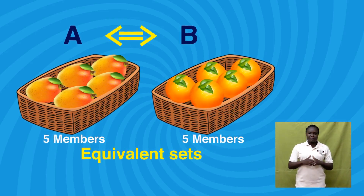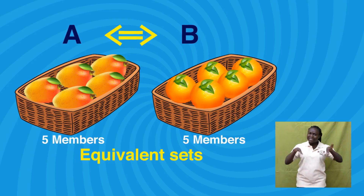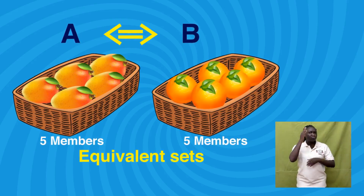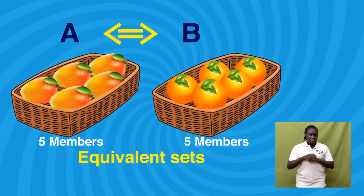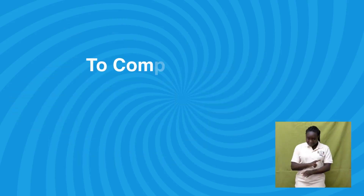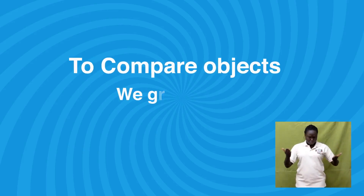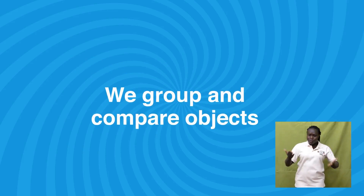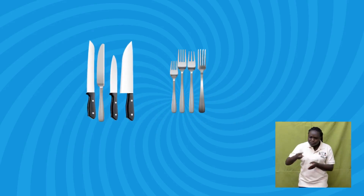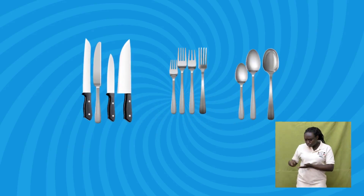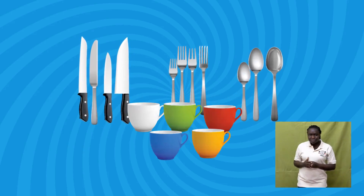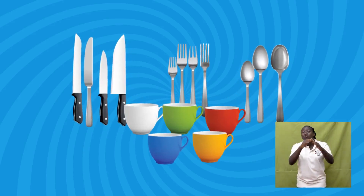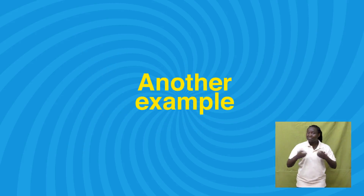Knowing equivalent sets is very important. This is because equivalent sets help us to compare objects. We group and compare objects. For example, I have knives put in one place, forks in another place, spoons in another place, cups, and many other things at home.